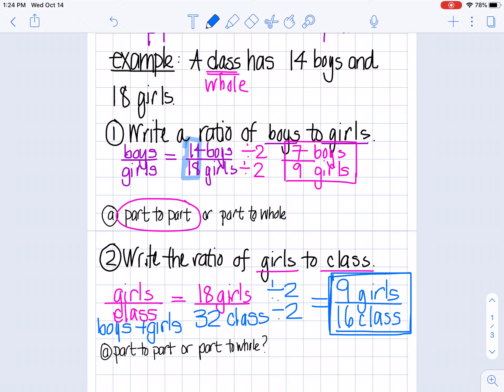Is this a part-to-part ratio or a part-to-whole ratio? It is a part-to-whole ratio because my class is the whole number of people that I'm looking at. I hope that helps explain ratios. If you have any other questions, let me know.